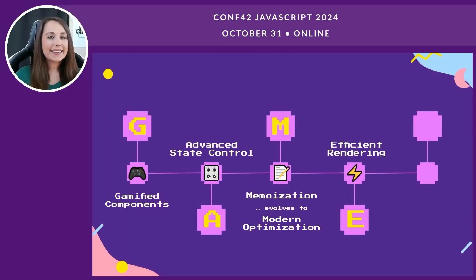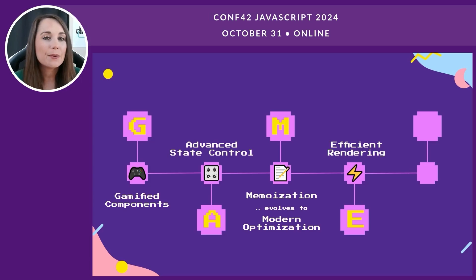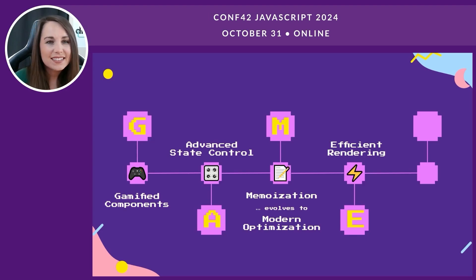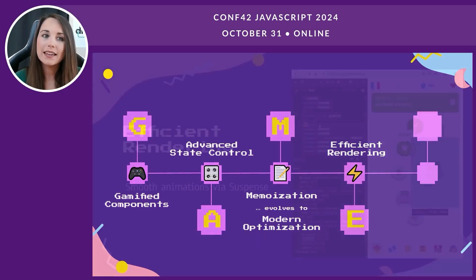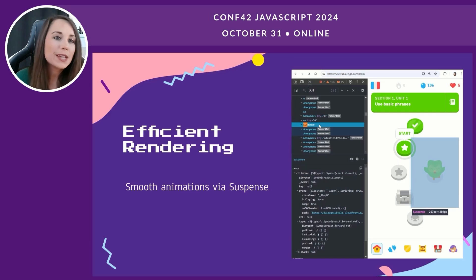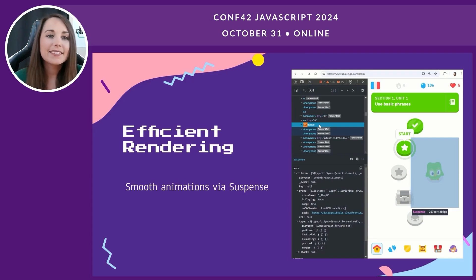The E in GAMES stands for efficient rendering — loading the right components at the right time. With React Lazy and Suspense, we can load components on demand, reducing initial load time and improving performance. Efficient rendering techniques help us manage heavy assets or complex components without blocking the user. Duolingo uses React Suspense to handle the loading of character animations, ensuring animations only render once fully loaded, preventing incomplete or laggy visuals during interactions.